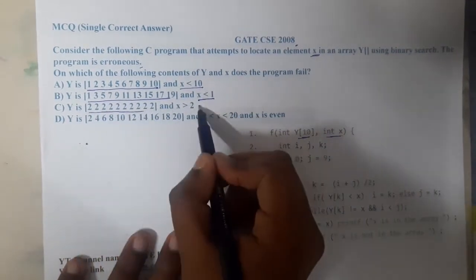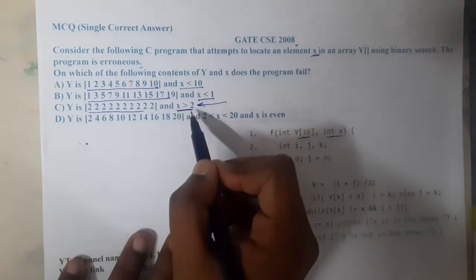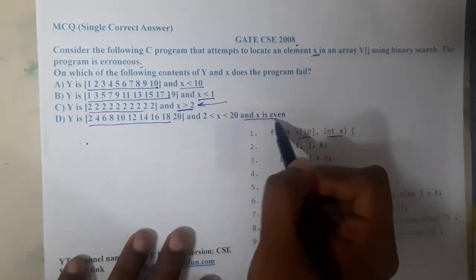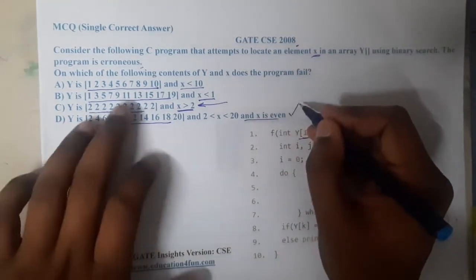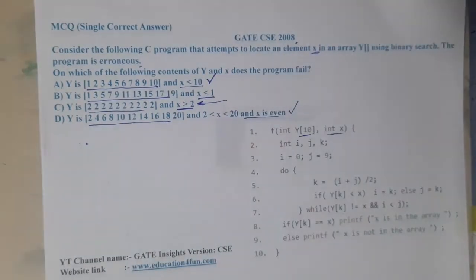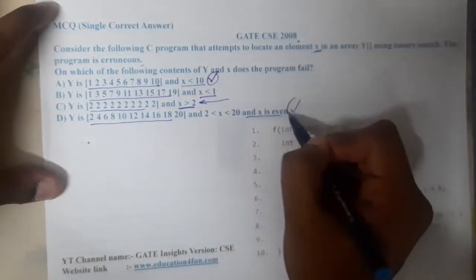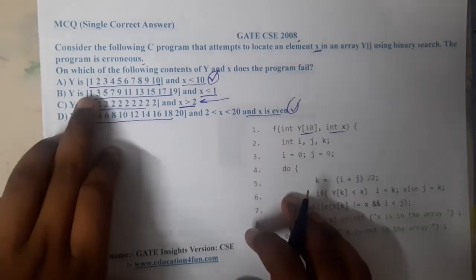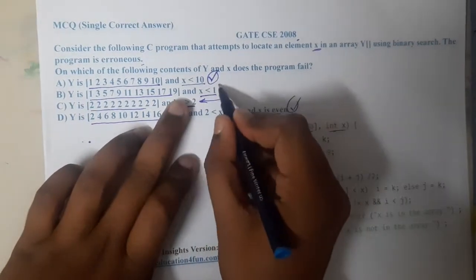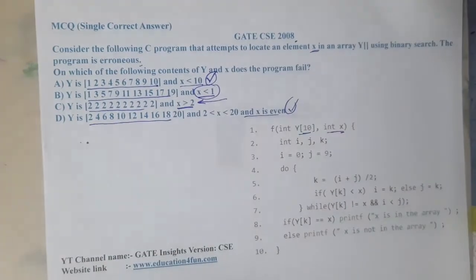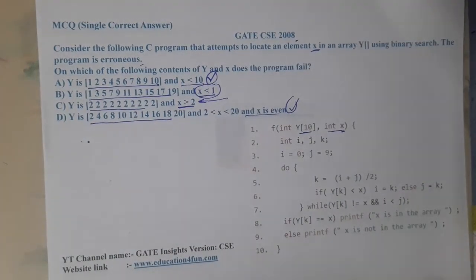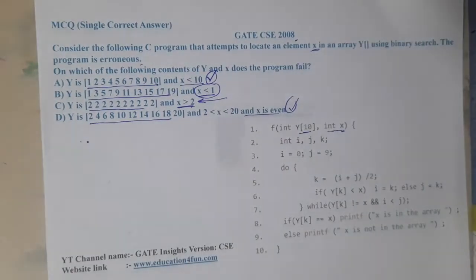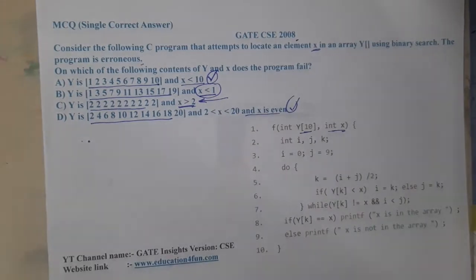In option C, all elements in y are 2 and the search value x is greater than 2 — I'm skeptical about this case. In option D, the array has even numbers 2, 4, 6, 8 and we are searching for an even number, which seems fine. Option B is confusing because the values are 1 to 19 but x is less than 1, so x will obviously not be in the array. Option C is also confusing since everything is 2 but x is greater than 2.